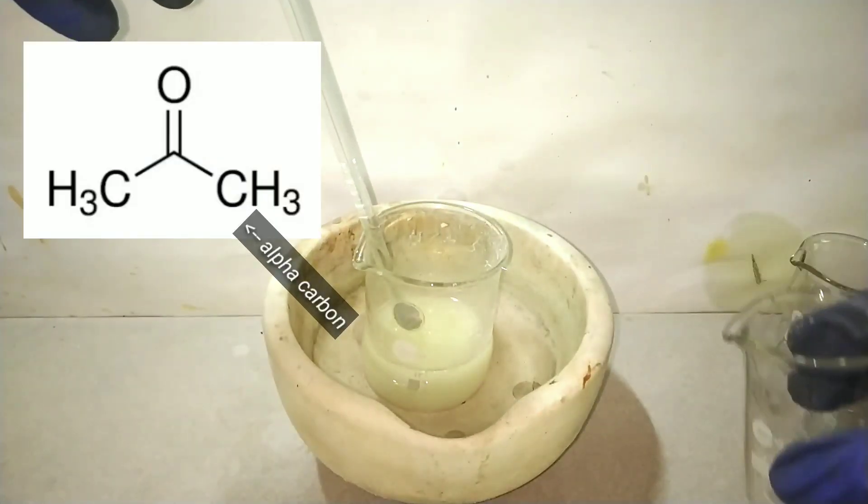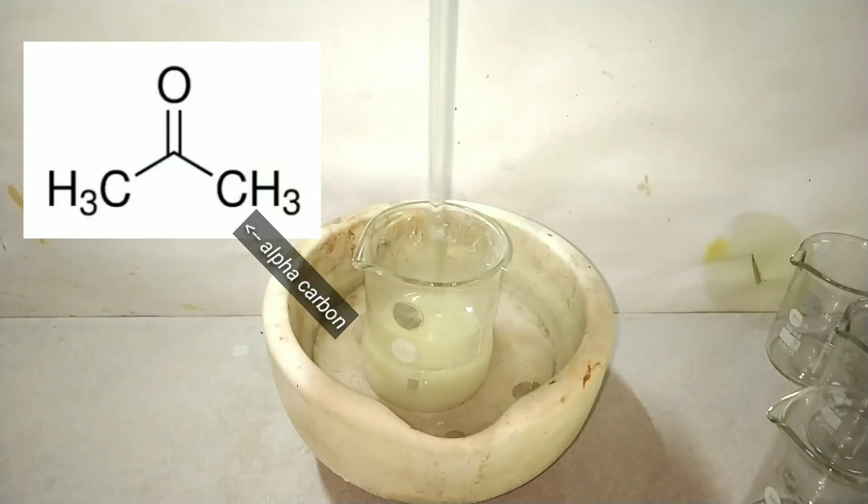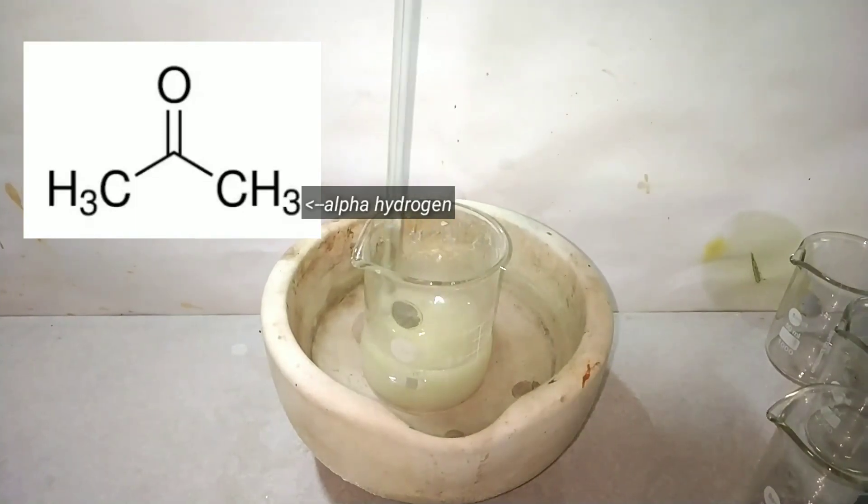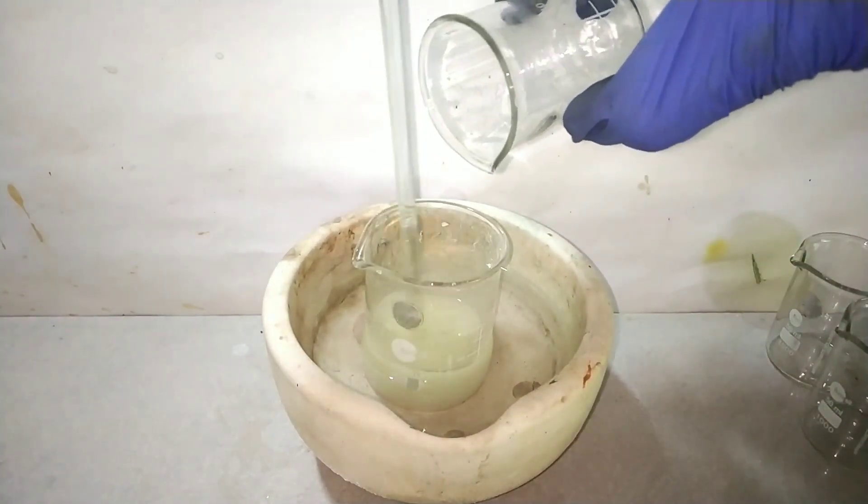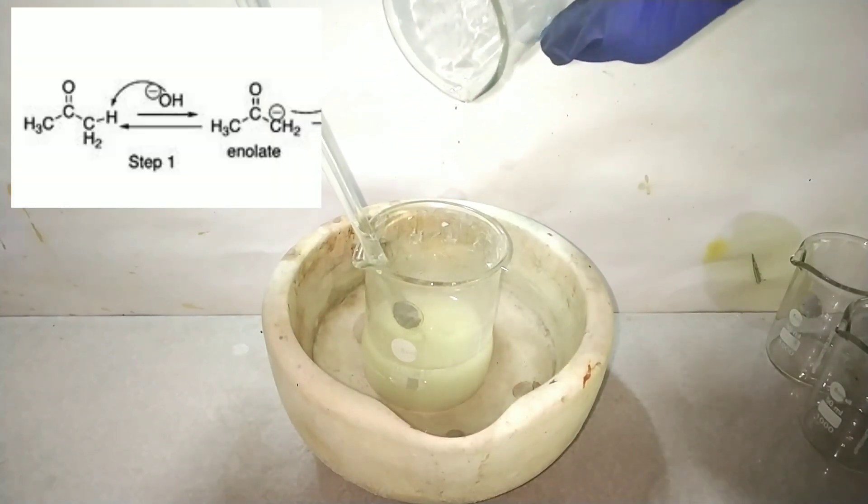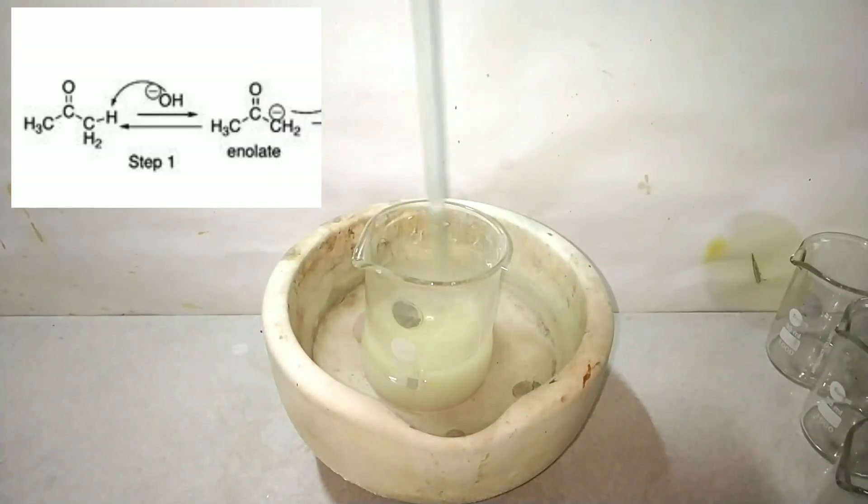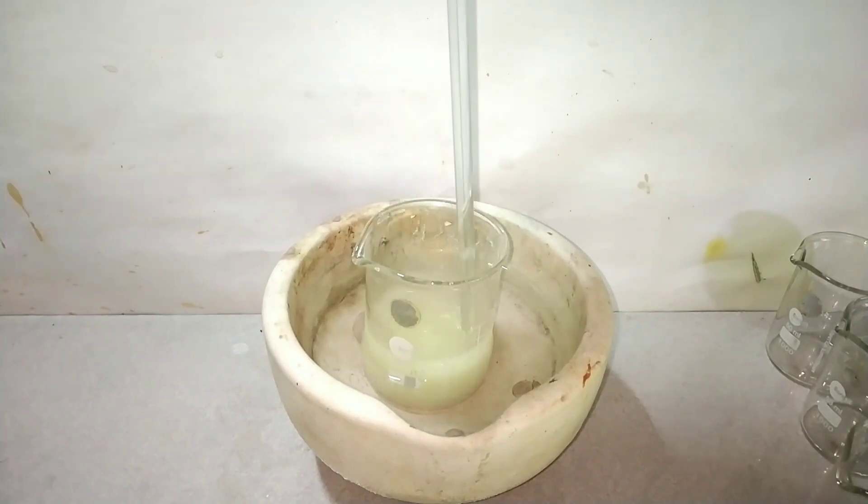The carbon atoms of the acetone directly attached to the carbonyl group are the alpha carbons, and the hydrogen atoms on them are the alpha hydrogens. Alpha hydrogen atoms are acidic, so they react with the hydroxyl group of sodium hydroxide in a typical acid-base reaction. So the alpha hydrogen atom reacted with the hydroxyl group to generate a molecule of water.